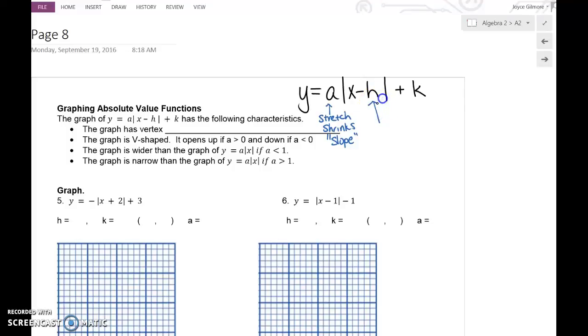h is the side-to-side movement, and because in this formula it says minus h, that makes it backwards. So minus h will move the function to the right, and plus h will move the function to the left.